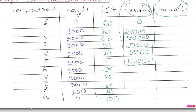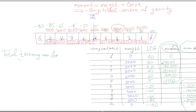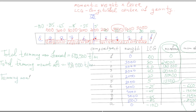Now we will calculate the compartments which are creating trim to aft. The total trimming moment to forward will be 602,500 ton-meters.